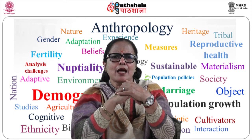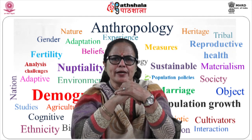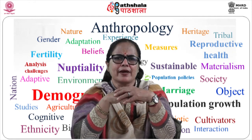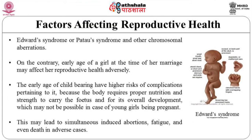Late age of pregnancy and conception also results in offspring having a higher risk of birth defects such as Down syndrome, Edwards syndrome or Patau syndrome and other chromosomal abnormalities. On the contrary, early age of a girl at the time of marriage may affect her reproductive health adversely. Early age of childbearing carries high risk of complications because the body requires proper nutrition and strength to carry the fetus and for its overall development, which may not be possible for young girls being pregnant. This may lead to induced abortions, fatigue and even death in adverse cases.